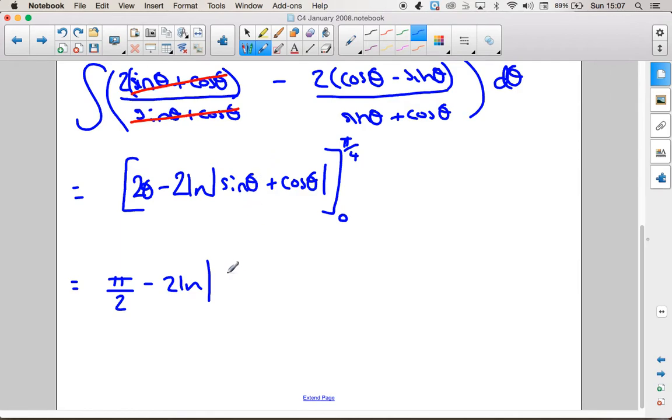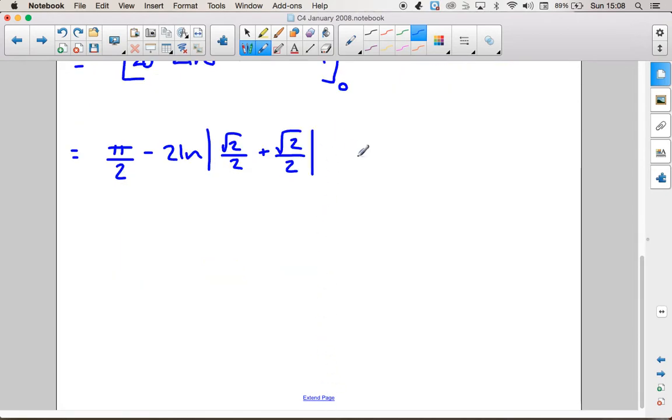Sin of pi over 4 is root 2 over 2 plus cos of pi over 4. Cos of pi over 4 is also root 2 over 2.